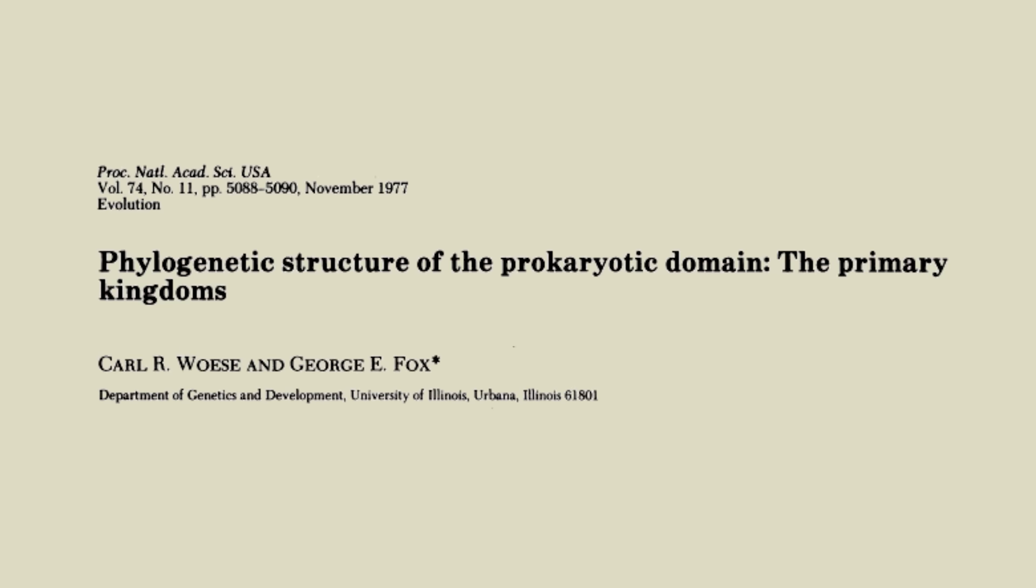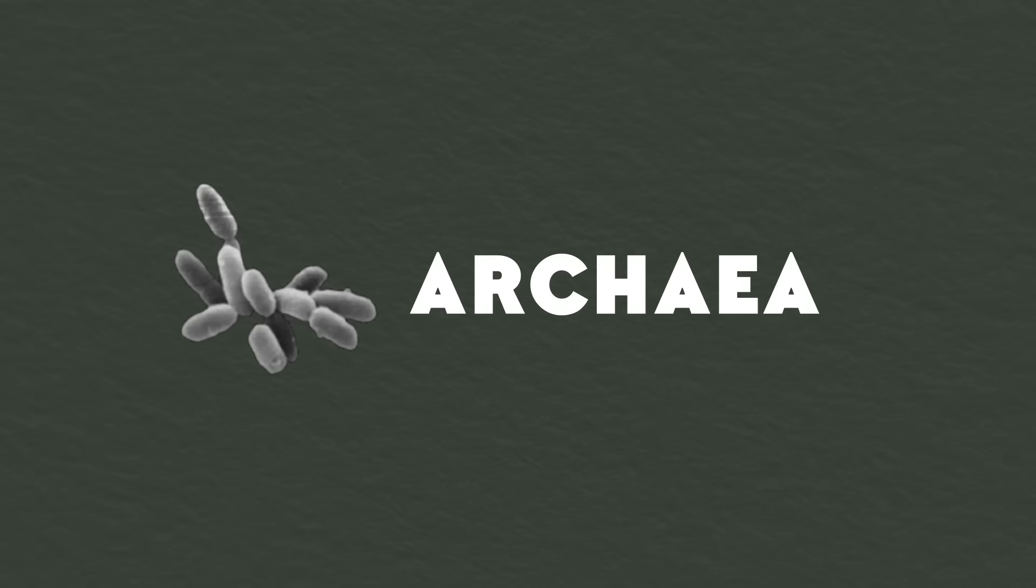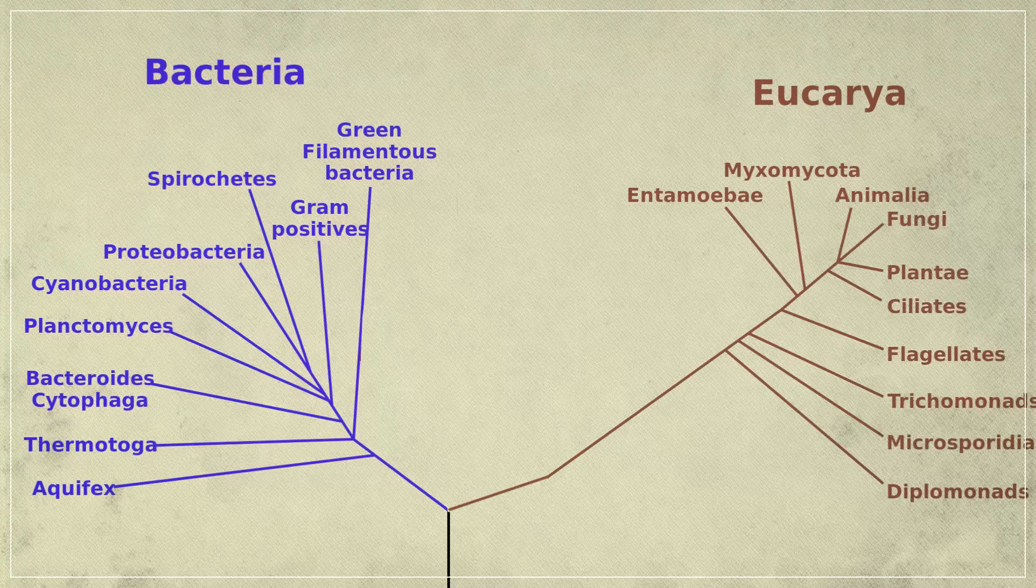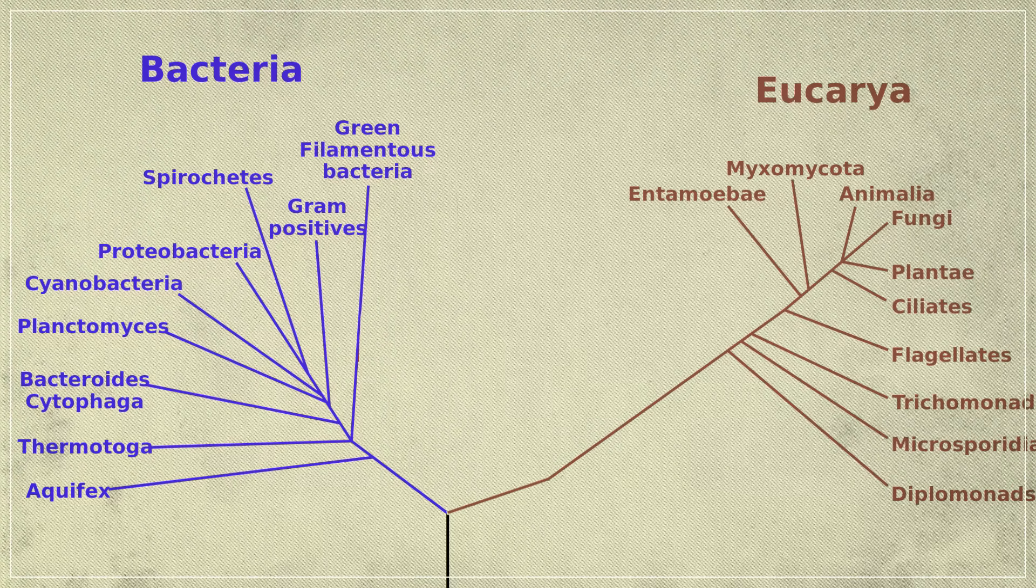In 1977, he discovered the existence of organisms that would make up a whole new domain of life, and a key to the search for Luca. He discovered archaea. They're a group of prokaryotes, simple single-celled organisms that are vaguely similar to bacteria.